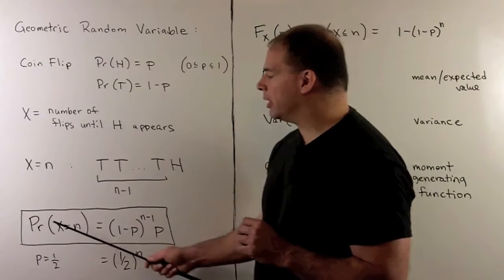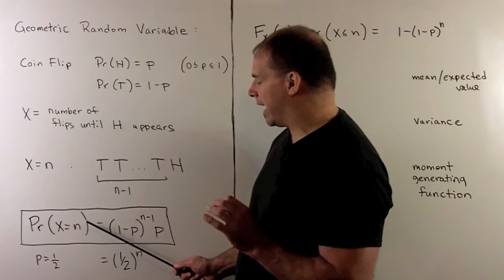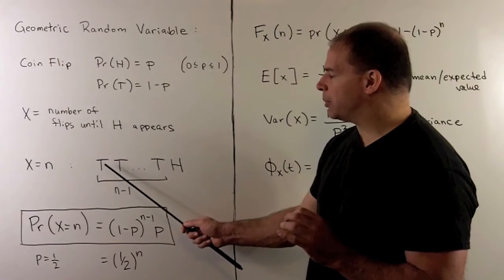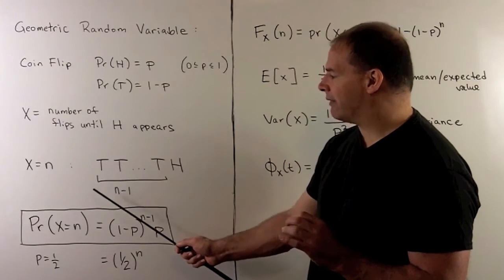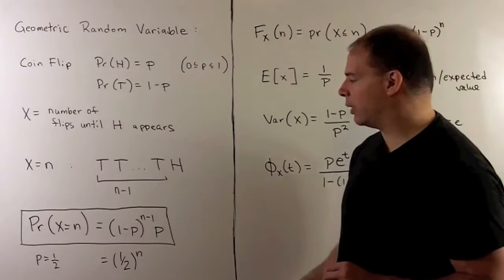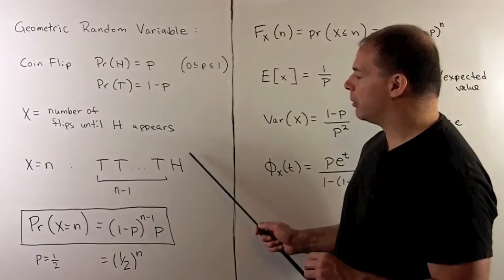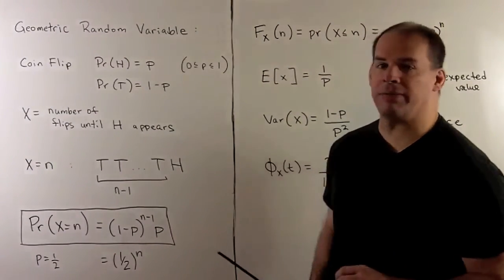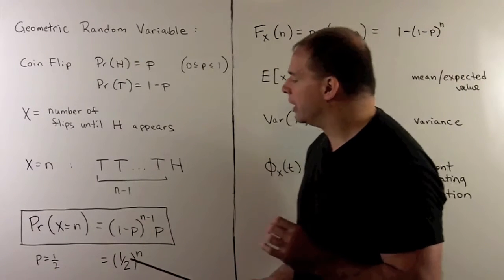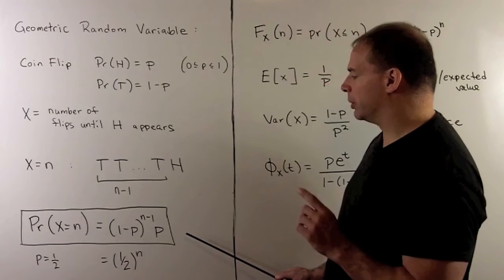If we want the probability for when the random variable is equal to N: the probability of a tails is 1 minus P, and we have N minus 1 of those, so we multiply to get (1 minus P) to the N minus 1. Multiplying by the probability for heads gives us P. So this completely describes our probability distribution.